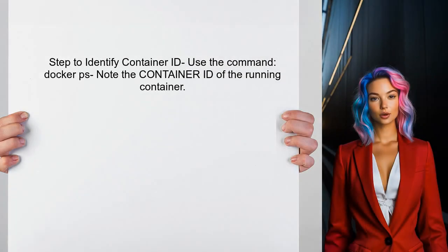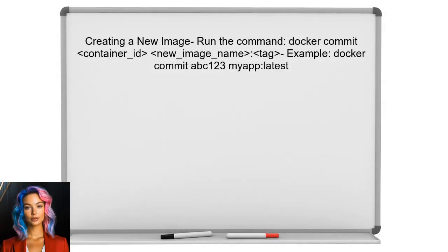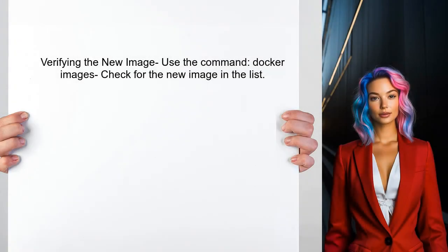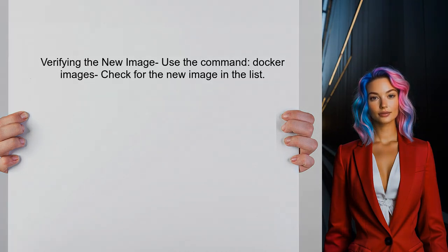To do this, the user should first identify the container ID of the running container. This can be done by using the docker ps command to list all running containers. Once the user has the container ID, they can execute the commit command to create a new image. It's good practice to include a meaningful tag to indicate the changes made. Finally, the user can verify that the new image has been created successfully by listing all images using the docker images command. This will show the newly created image alongside existing ones.